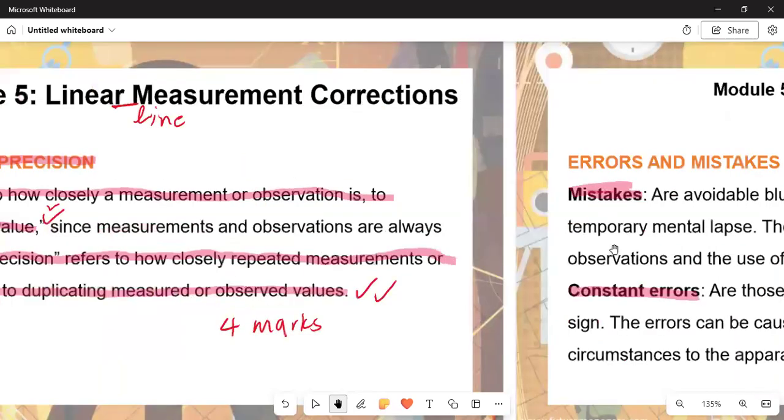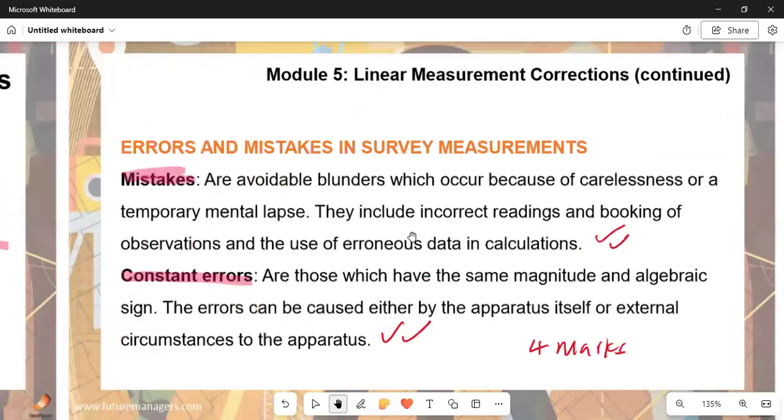Let's talk about the errors and mistakes in survey measurements. Mistakes are avoidable blunders which occur because of carelessness or temporary mental lapse. They include incorrect readings and booking of observations and the use of erroneous data in calculations. We must ensure that we limit errors in calculation.